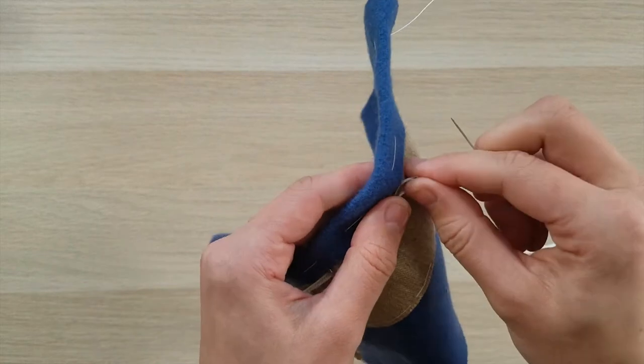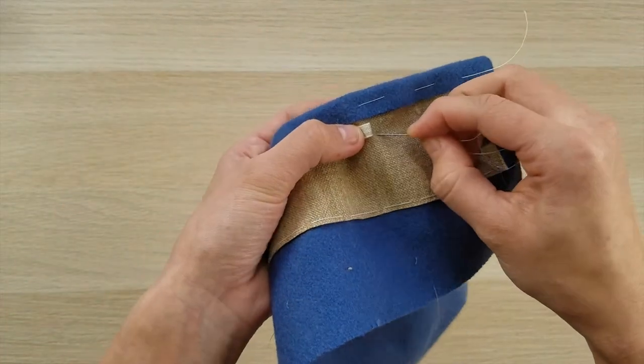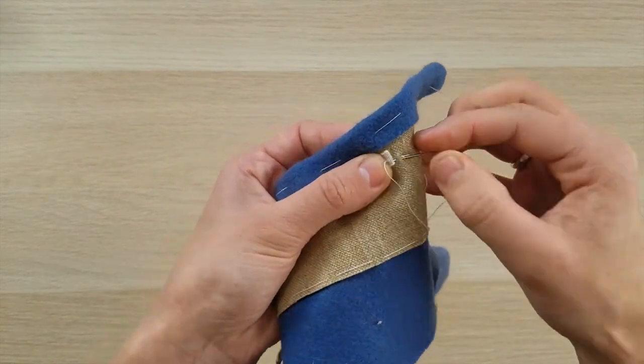Secure your tape by whipping down the edges. This method is recommended by Cuthbertson for military coats in particular because of its durability, but can also be used on civilian clothing with metal buttons.